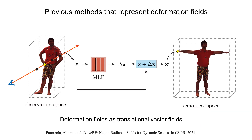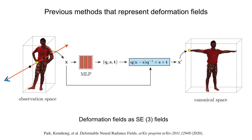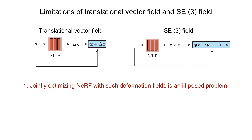Some methods represent the deformation field as a translational vector field. The deformation field can also be represented as an SE3 field. Although these methods can handle some dynamic scenes, they are not suited for representing animatable human models due to two reasons.